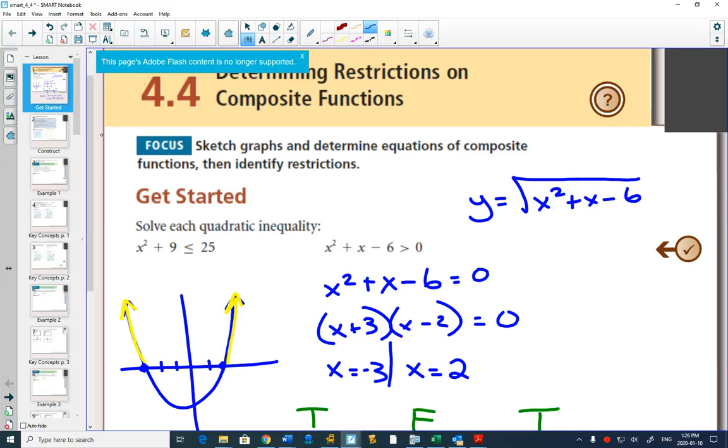Notice I just took this equation, x² + x - 6, and put it inside of a square root. That's a composition of functions, because the parabola is now inside of a square root function. That makes it a composition of functions. What do you know about square root functions? You can only take a square root of a positive number. So what do we need? We're going to need the inside to be bigger than 0. Does that make sense?